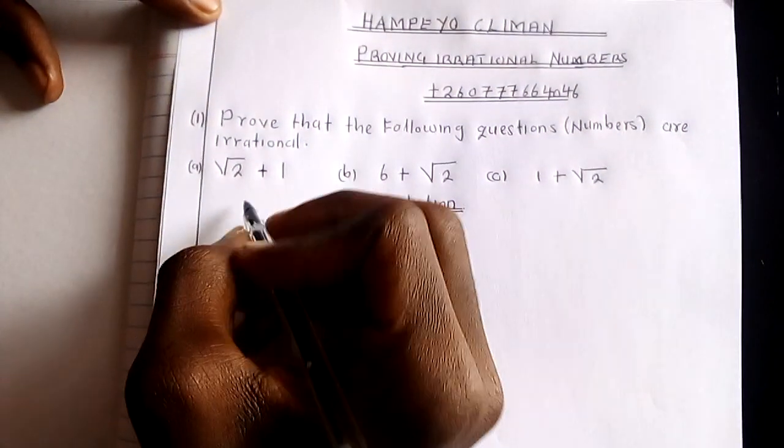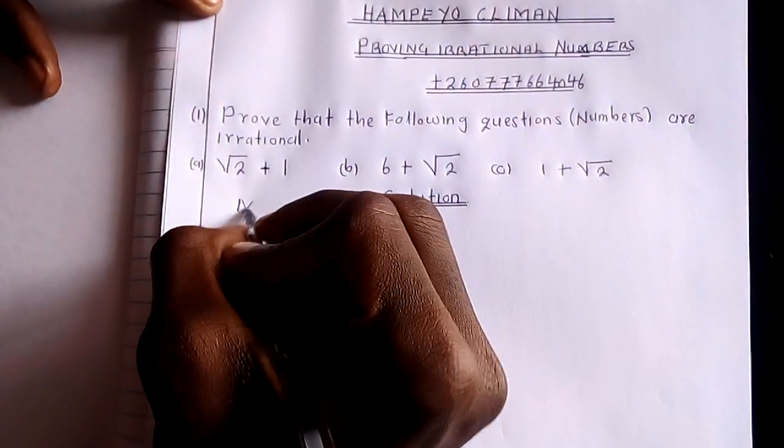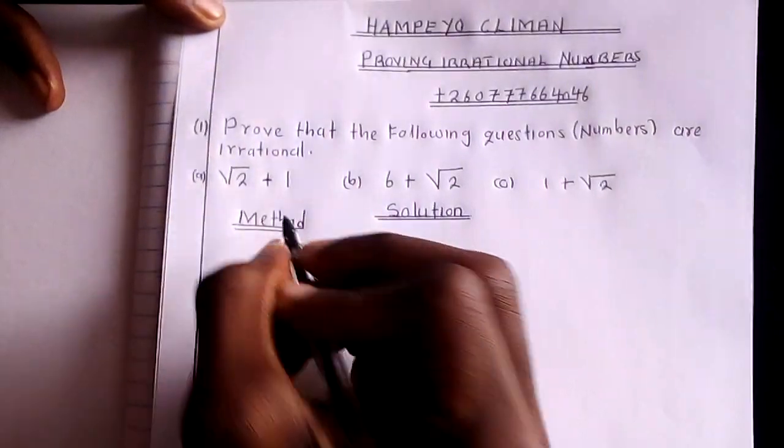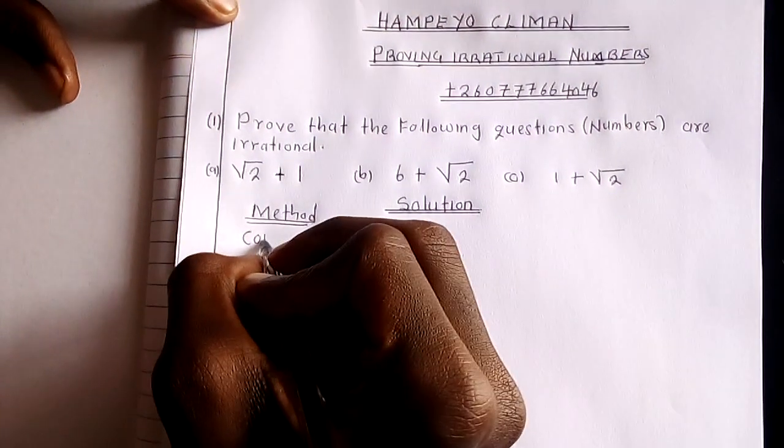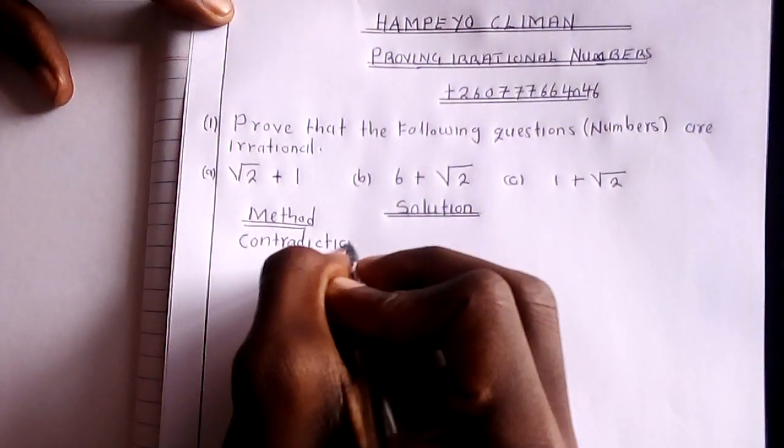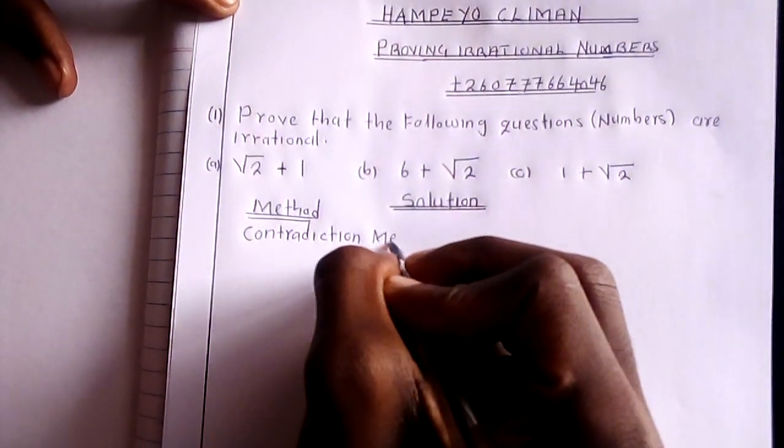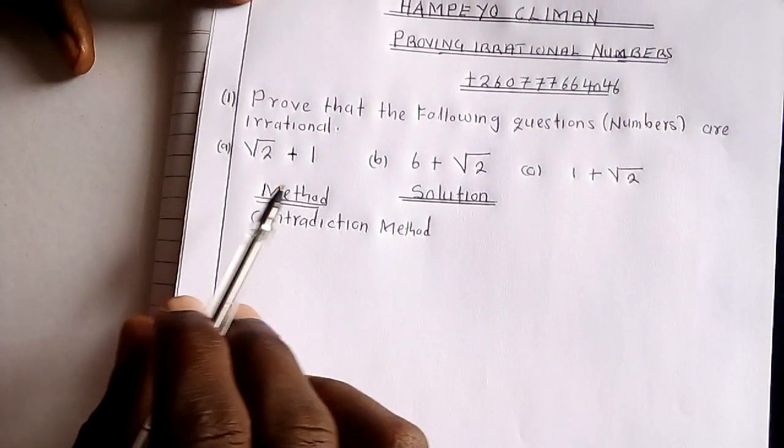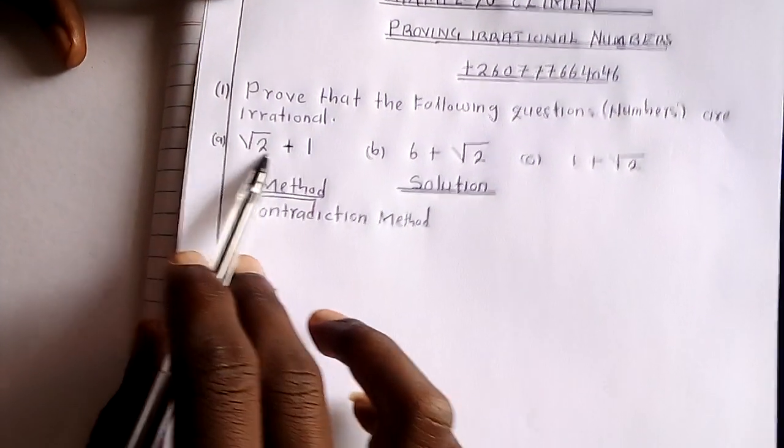So now the method that we use is called the contradiction method. So instead of us assuming that this is irrational,